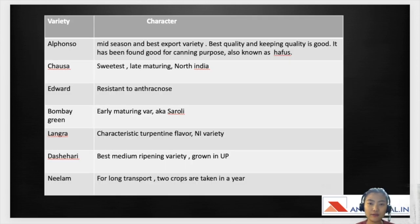So in the same way I've given some of the important varieties of mango as well as the specific characters. The first one is Alfonso so it's grown in the mid-season and it's the best export variety and it has the best quality and best keeping quality. It has been found good for canning purposes and it is also known as Hafus. Chausa it is a North Indian variety and it is the sweetest and it's late maturing.